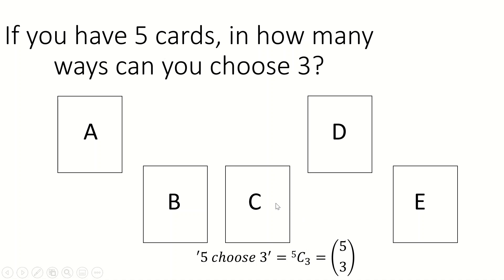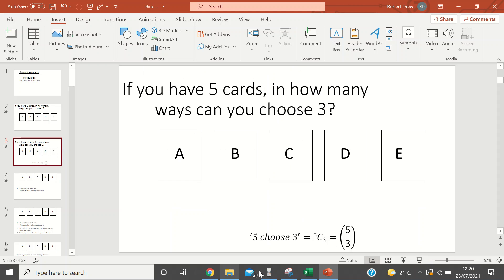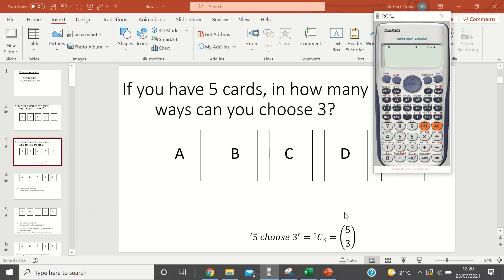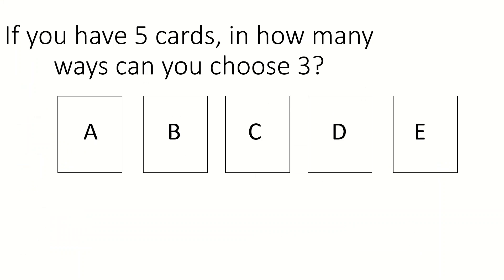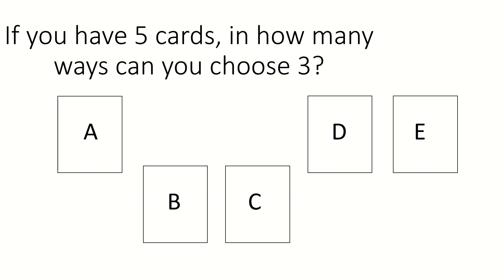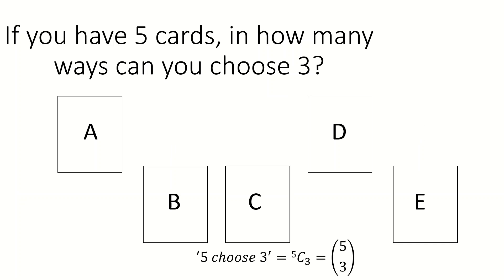I can get my calculator to work this out very quickly. So 5, then C — which is shift, divide — then 3, and I get that there are 10 ways of doing it. But what I'm obviously interested in is: how does my calculator know that? How does it know the answer is 10? So let's work it out.